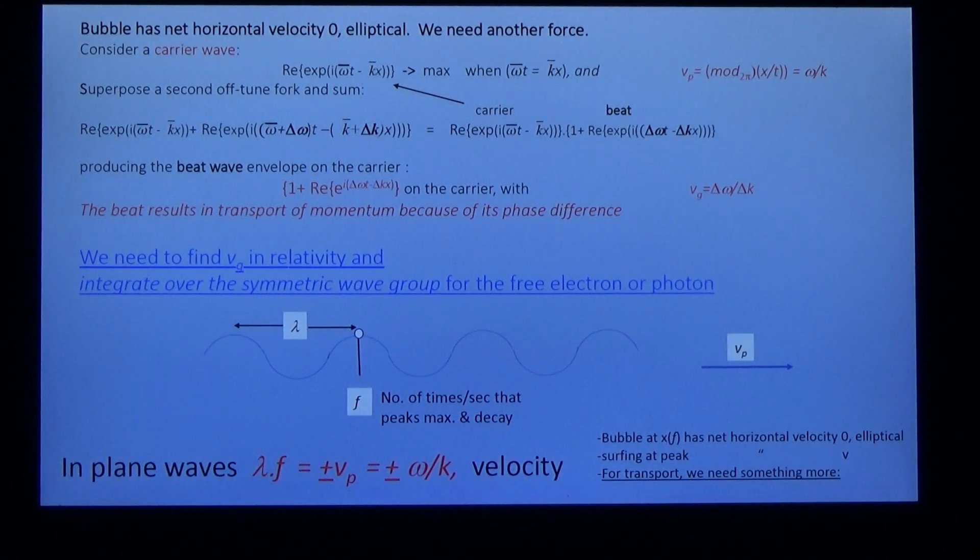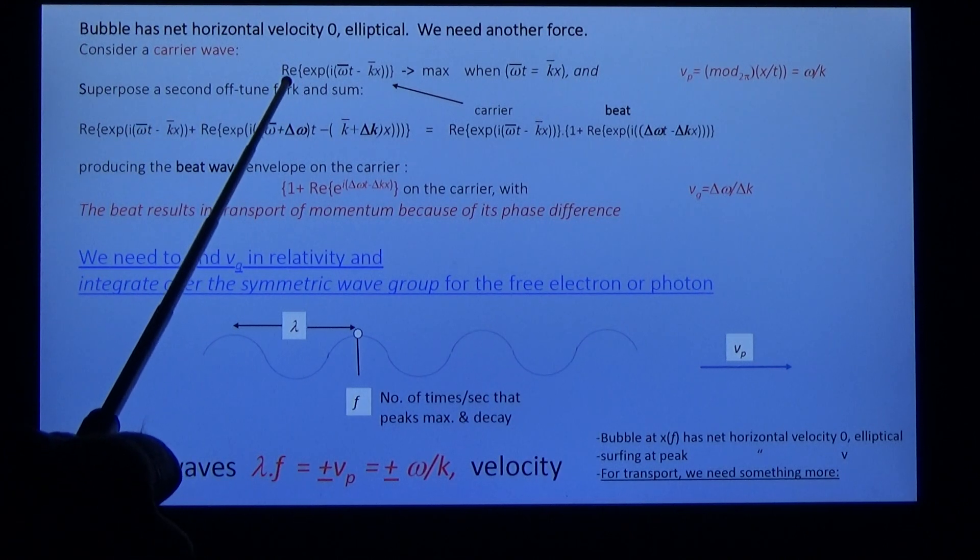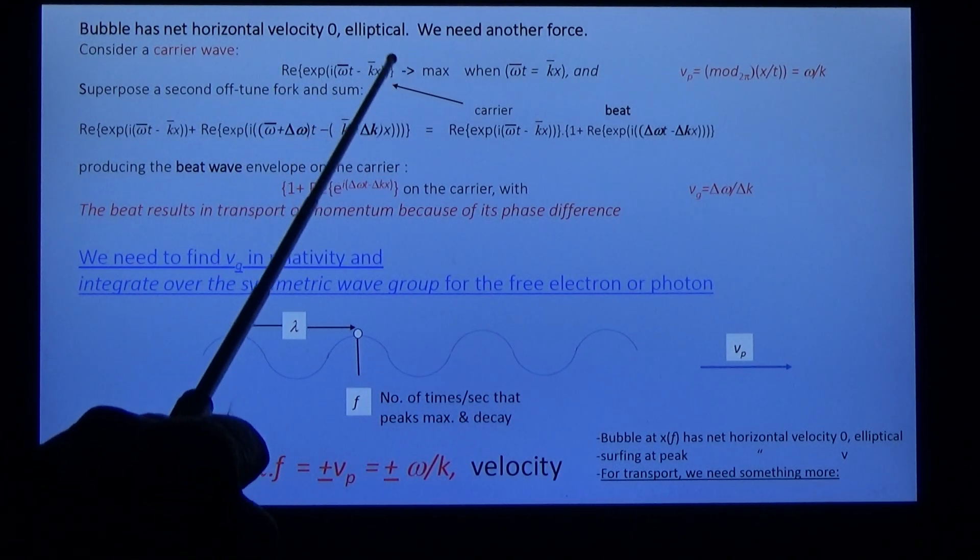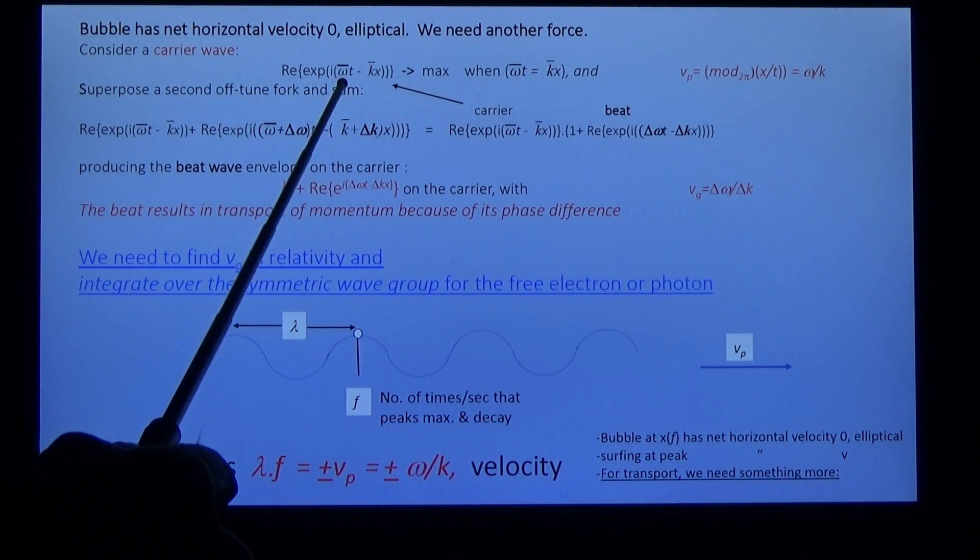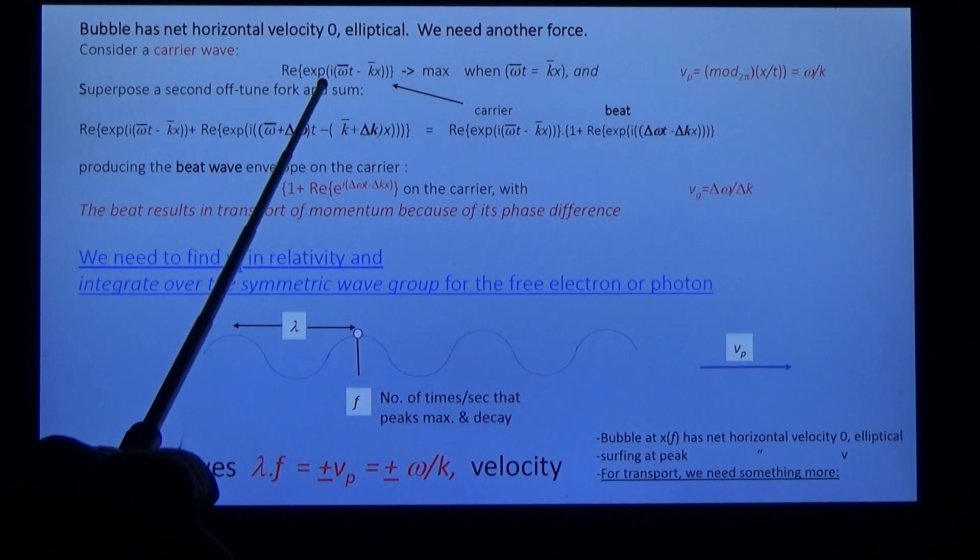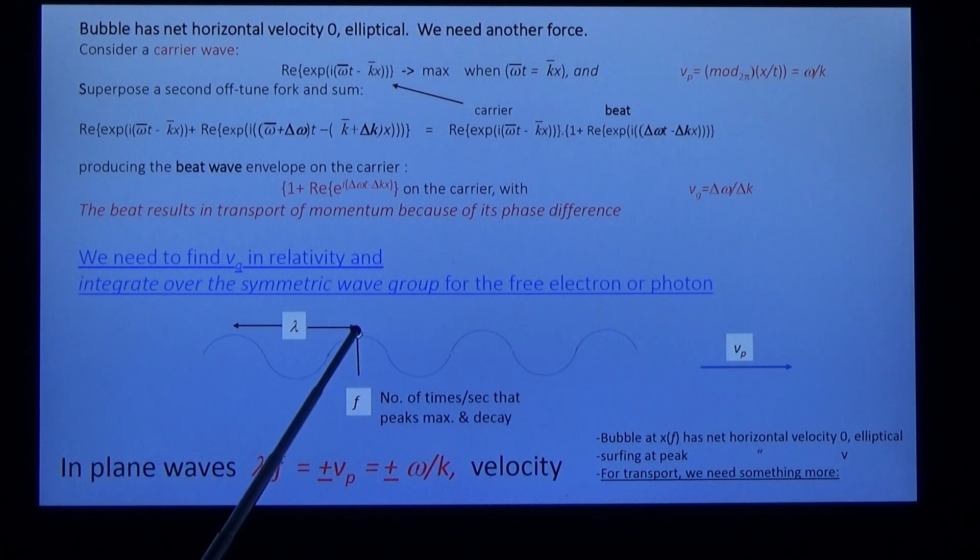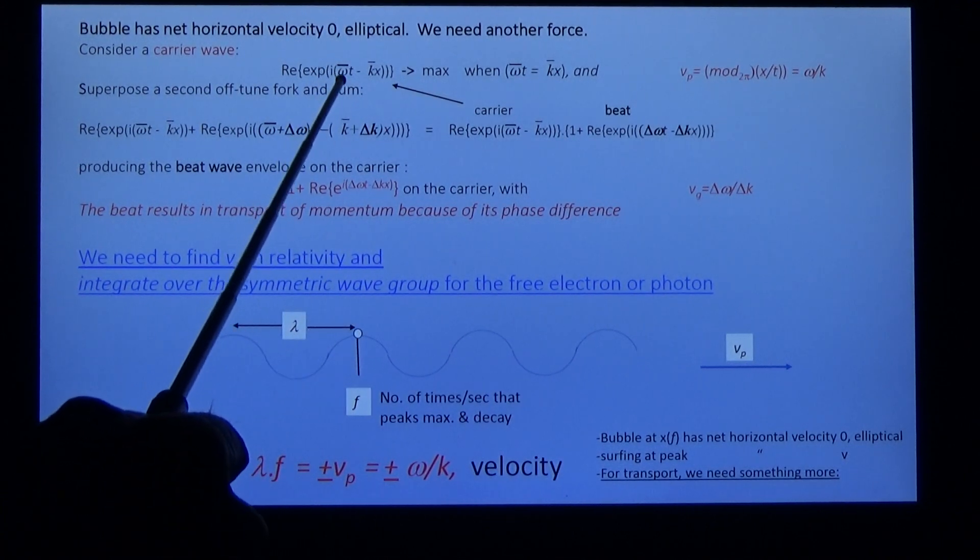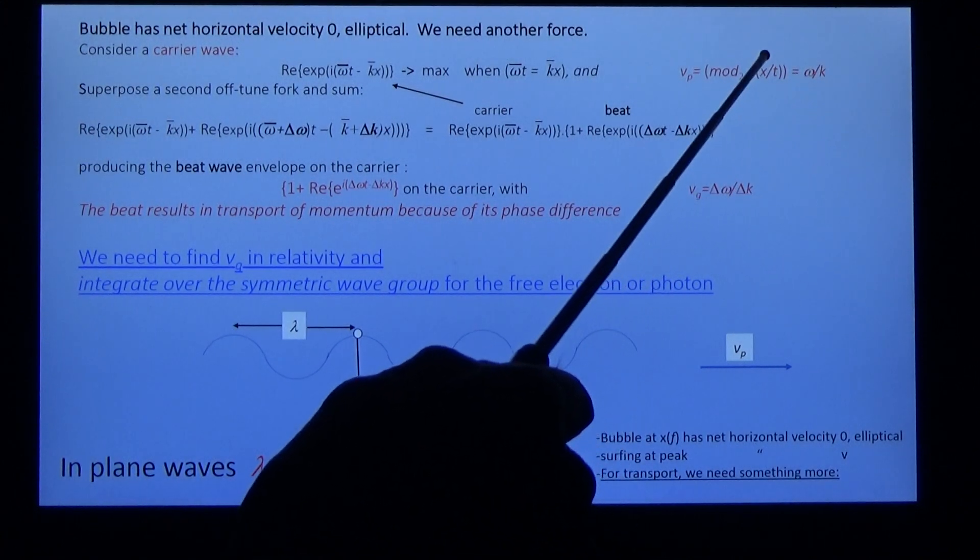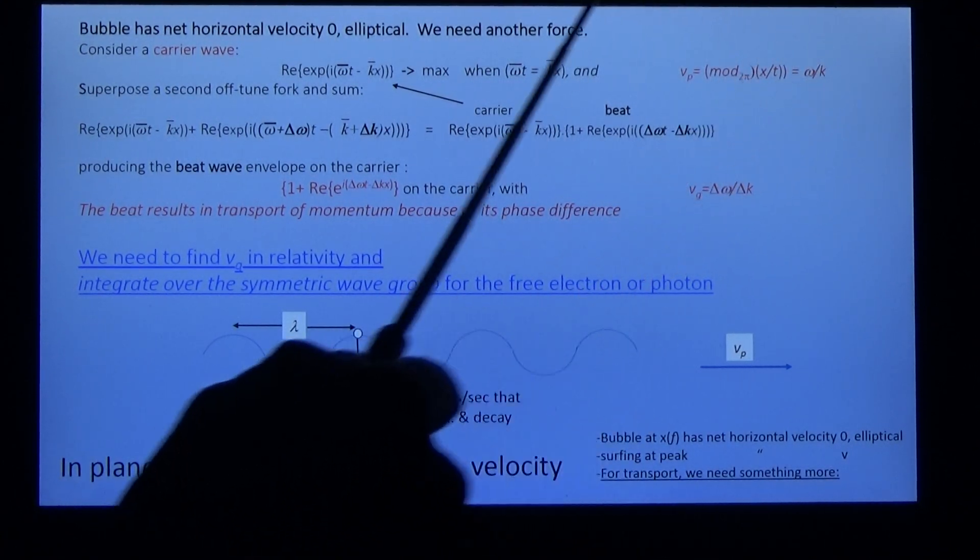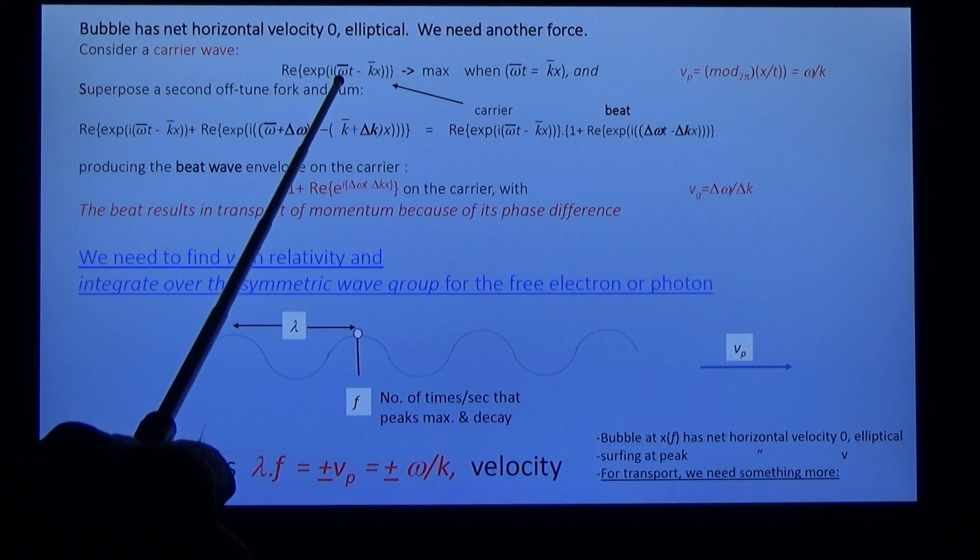I'm going to consider tuning forks. Consider a tuning fork putting out a sound wave, which we represent with this term in an equation. Notice that it's maximum when omega t equals kx, and that implies that x over t is equal to omega over k, so the speed is equal to omega over k. And that's the phase velocity.